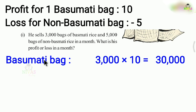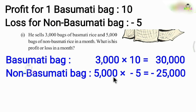For 3,000 bags of basmati rice at 10 profit per bag: 3,000 into 10 equals 30,000. For 5,000 bags of non-basmati rice at minus 5 loss per bag: 5,000 into minus 5 equals minus 25,000. So the total is 30,000 plus minus 25,000.